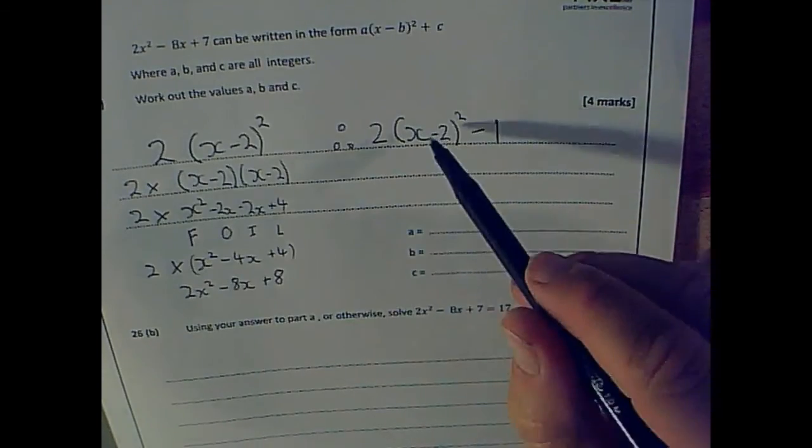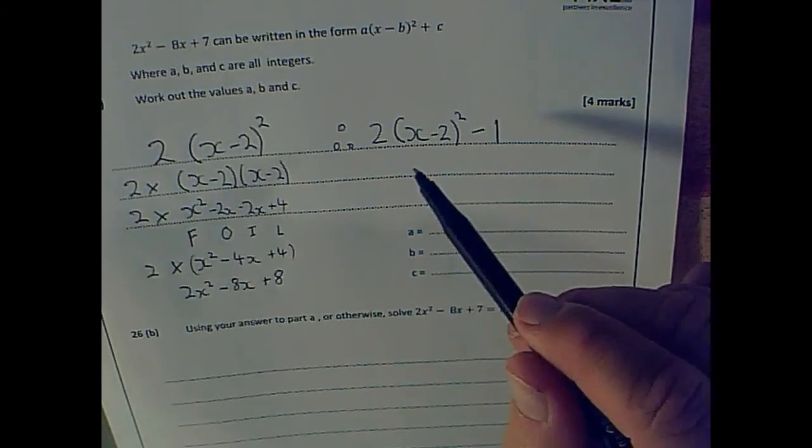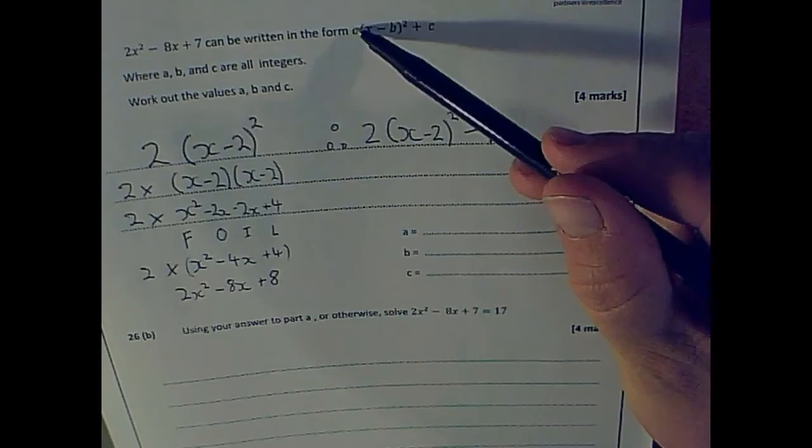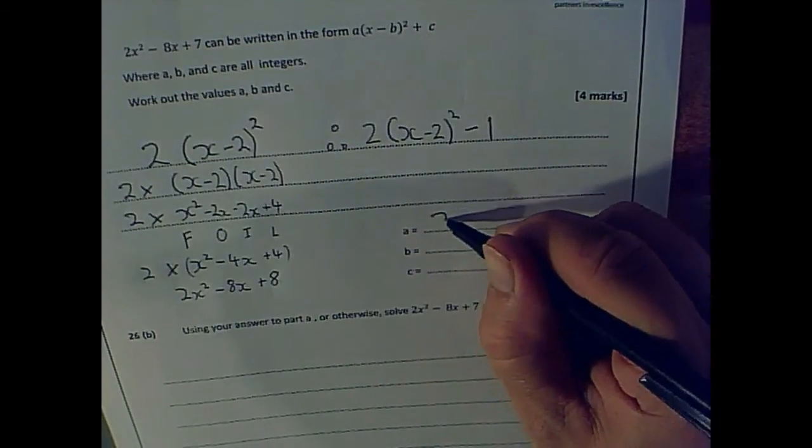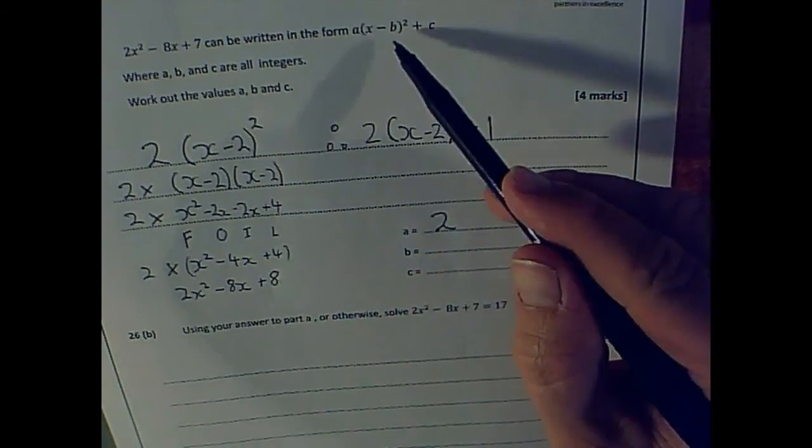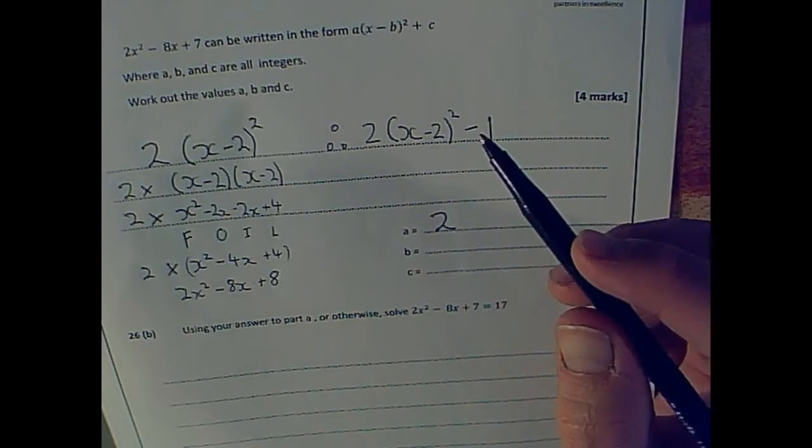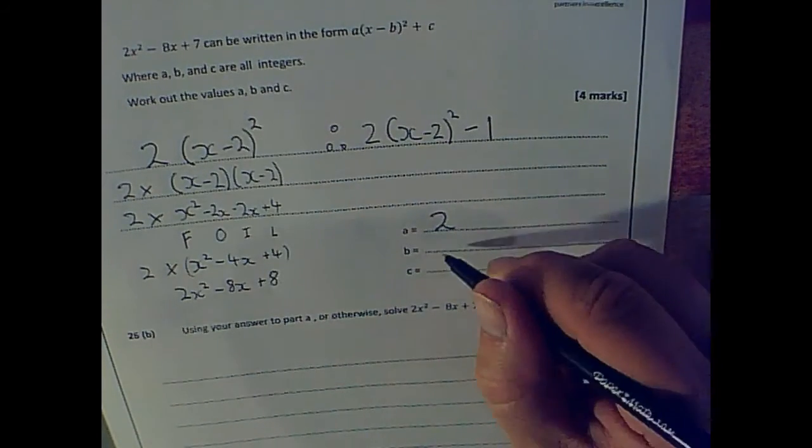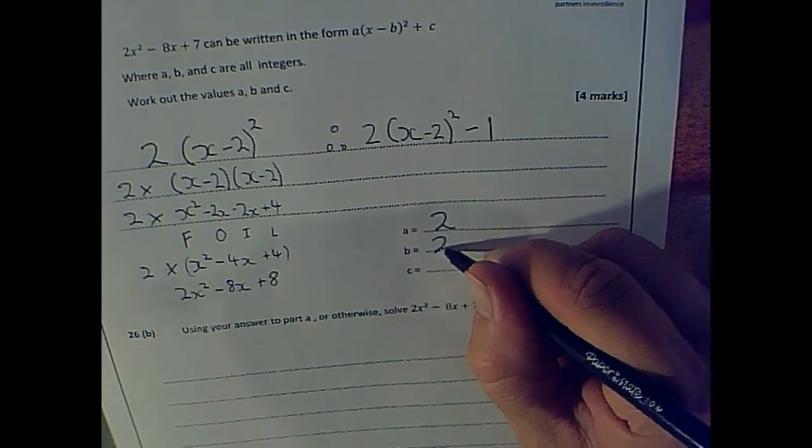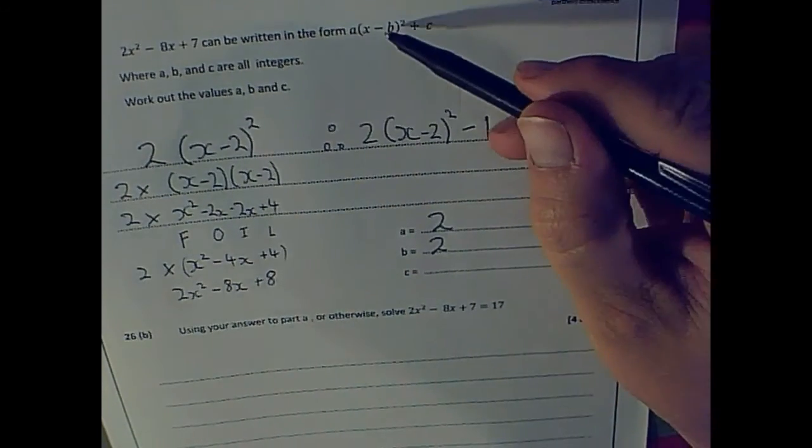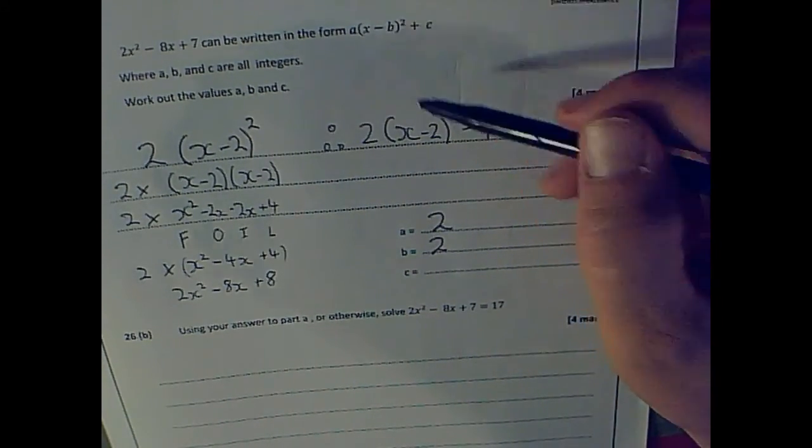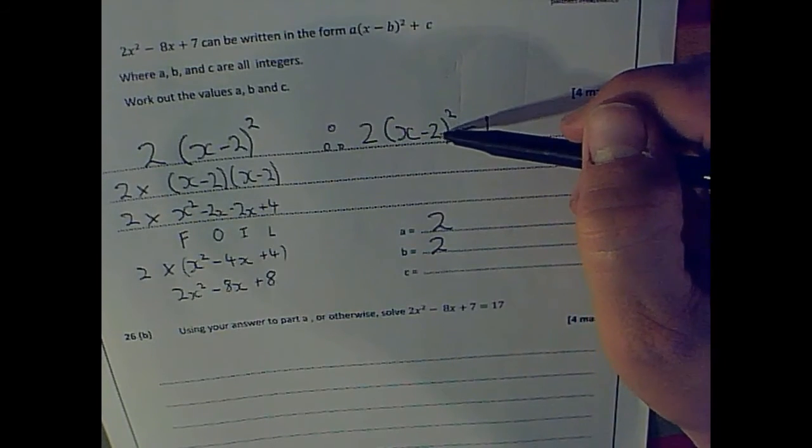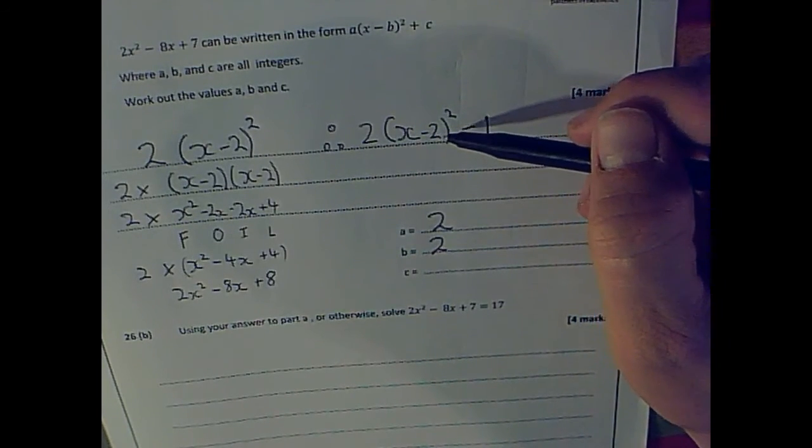That then matches up with that, and it's now in this correct form. So my value of a there is 2. My value of b there, careful, is 2. The reason it's not minus 2 is because the minus is given here. So that minus is already accounted for. So that is, in fact, 2.